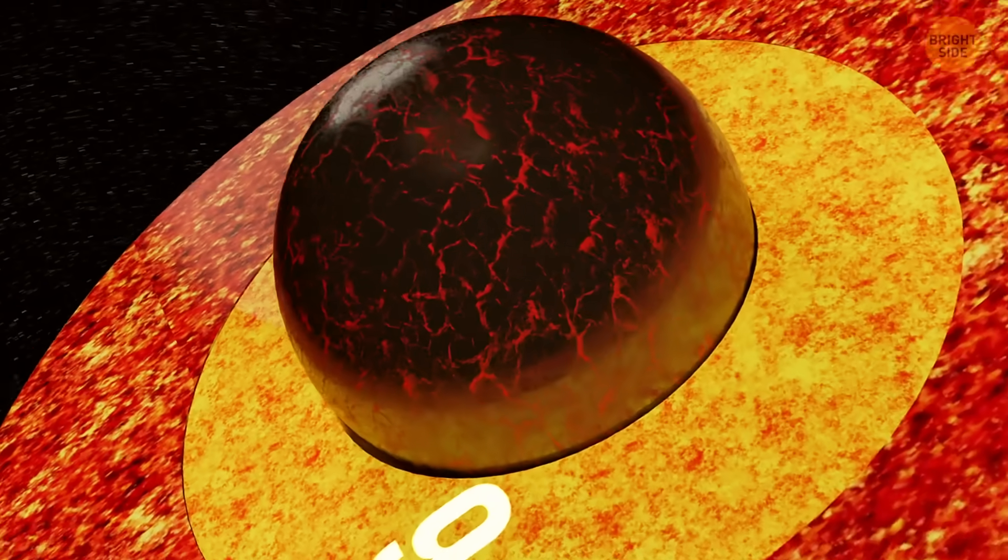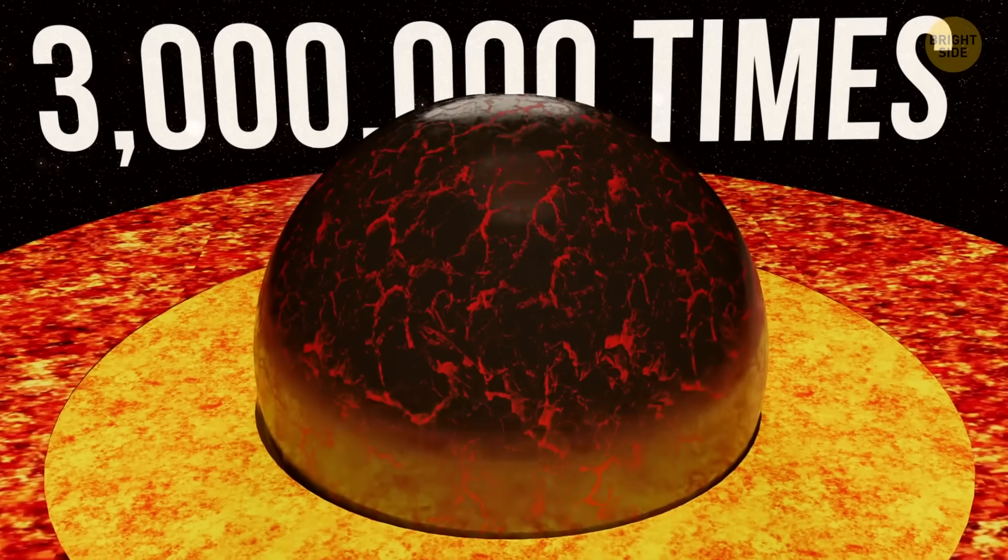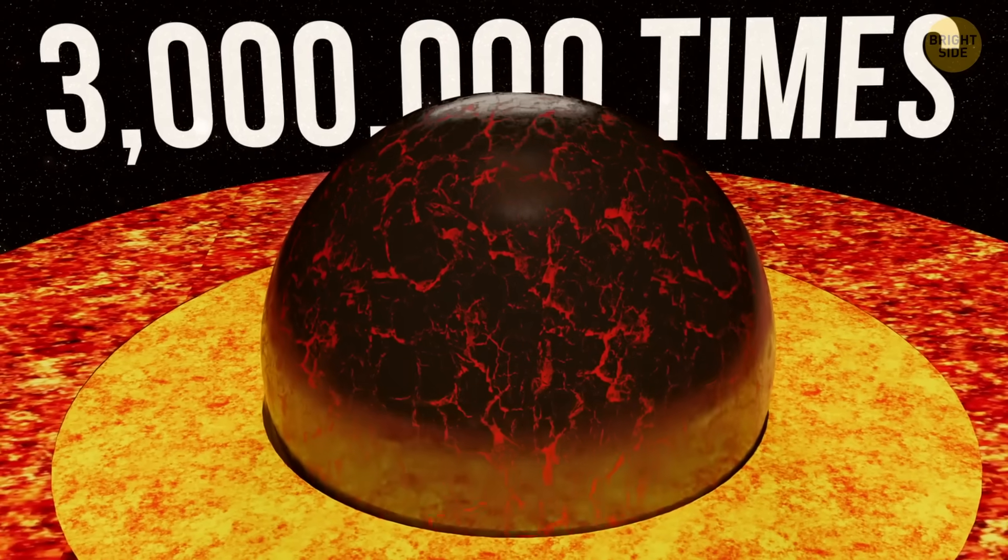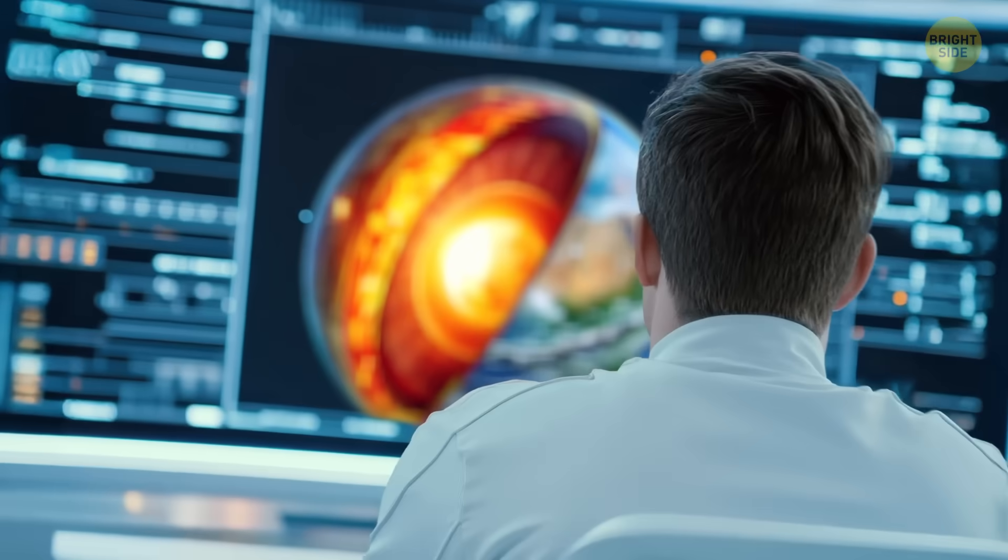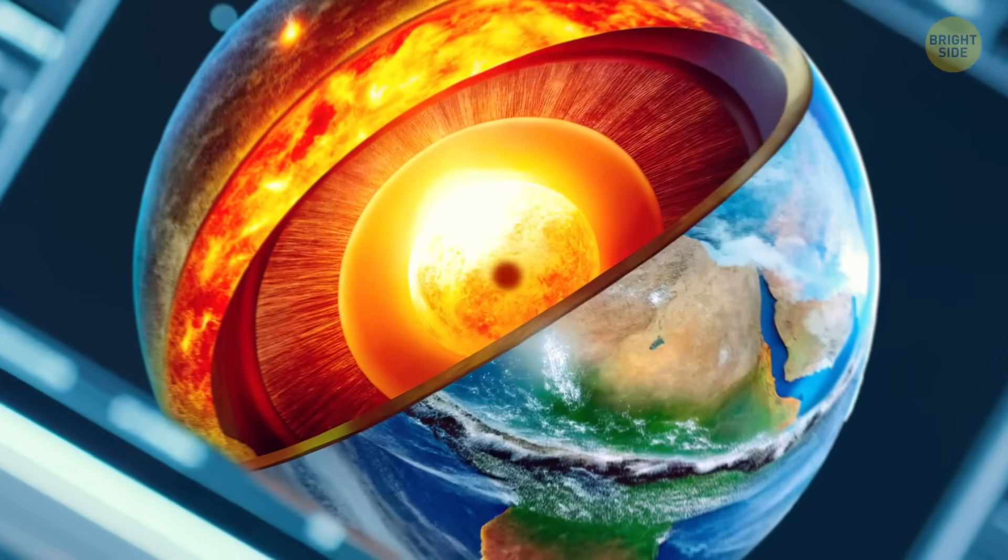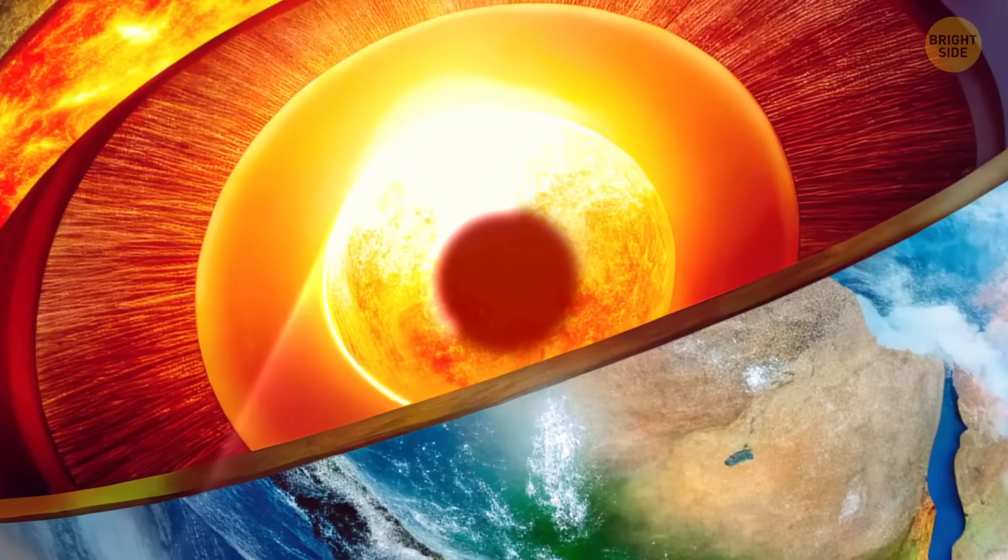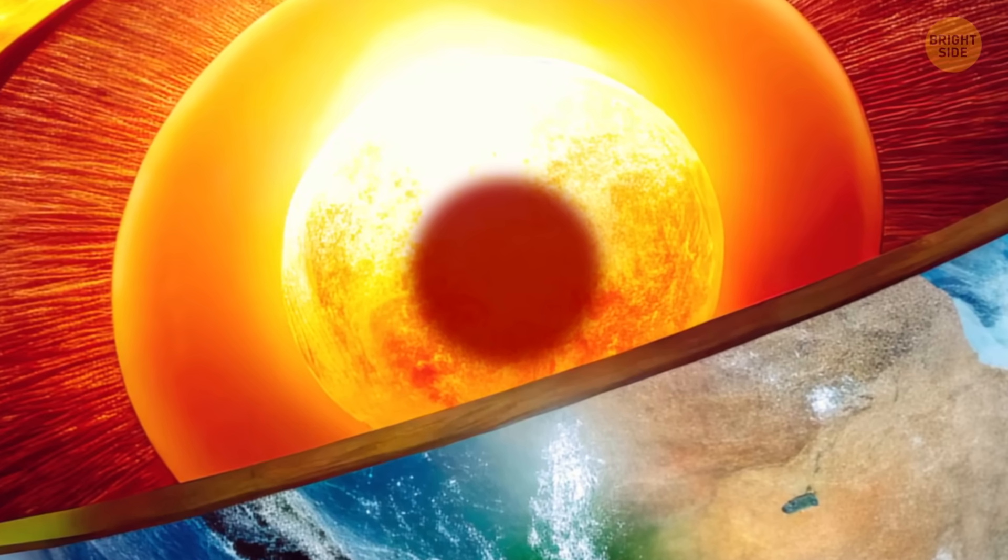The pressure there is staggering, over three million times greater than the pressure we feel on the surface. Some research even suggests that there might be an even smaller, denser core inside the inner core, thought to be made mostly of iron.